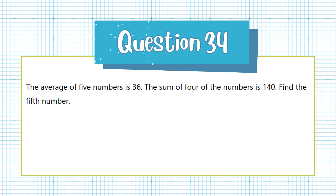Question 34. The average of 5 numbers is 36. The sum of 4 of the numbers is 140. Find the 5th number.